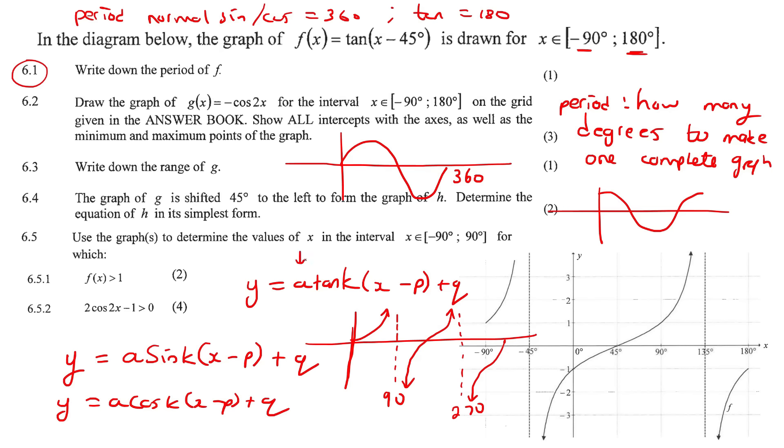However, one of these letters causes the period of a graph to change. And that letter is k. Now, as we can see, there is no k over here. There is no number over there. You could think of it as a 1. The new period is equal to the old period, or the normal period, divided by k.